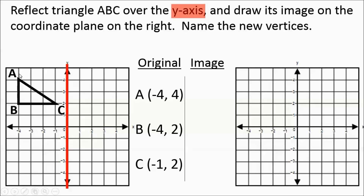Now if we look at these points, point A is currently 4 to the left of the y-axis, so its reflection is going to be 4 to the right. Same thing with point B — it's 4 to the left, so its reflection will be 4 to the right. Point C is 1 to the left of the y-axis, so its new location will be 1 to the right.